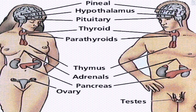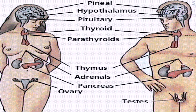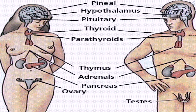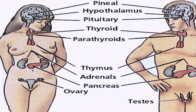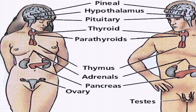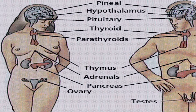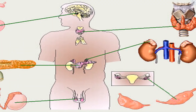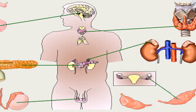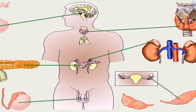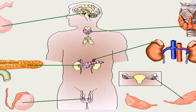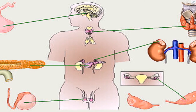It derives from the Greek words 'endo' meaning inside or within, and 'crinus' for secrete. The endocrine system is an information system similar to the nervous system, yet its effects and mechanisms are classifiably different.